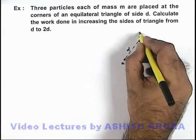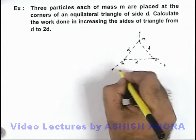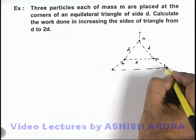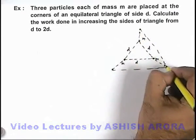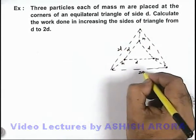And when these masses are separated away from each other in such a way that finally they are located at the vertices of another equilateral triangle which is having sides 2d, 2d, and 2d.